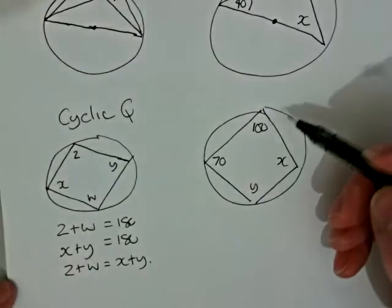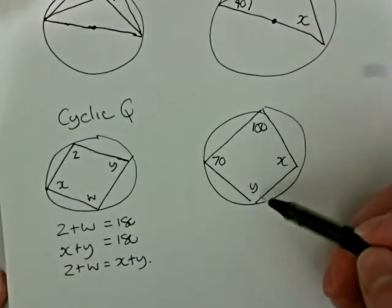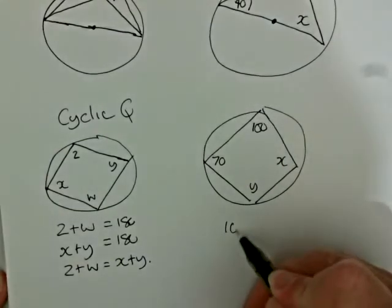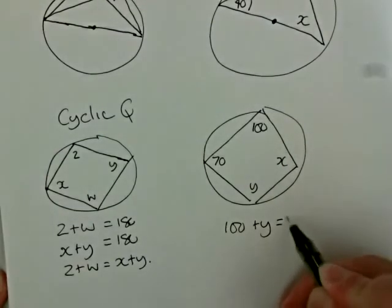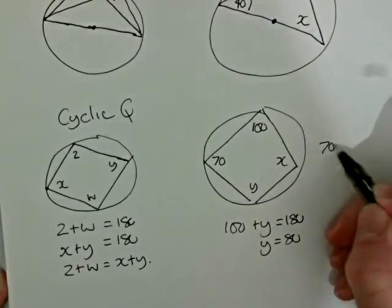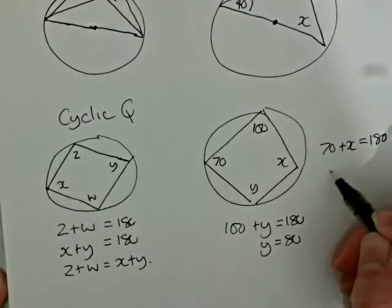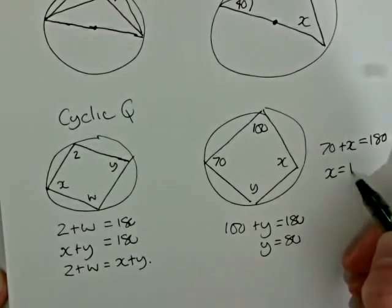So if we come over to our problem here, we can see we've got 100 degrees here. So the angle y, 100 plus y equals 180, so y equals 80. And 70 plus x equals 180, so therefore x must equal 110.